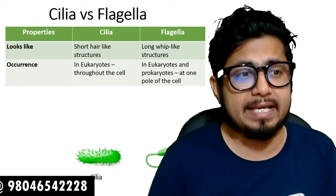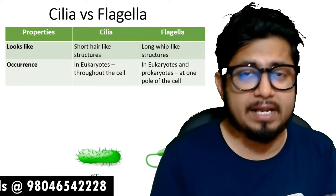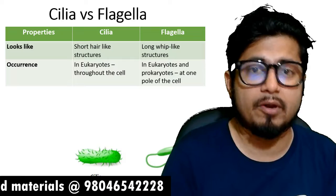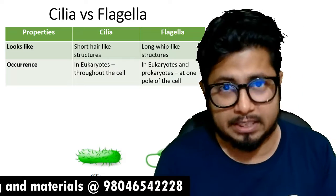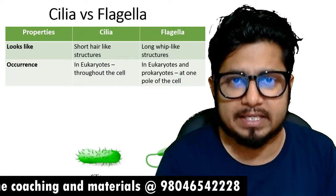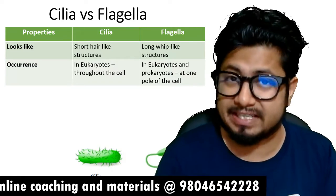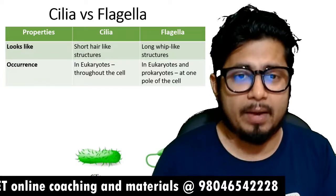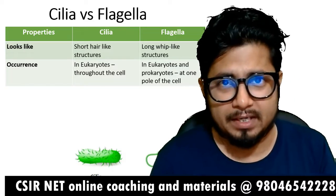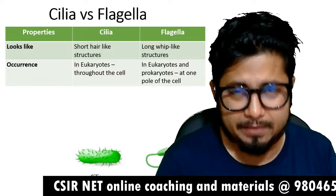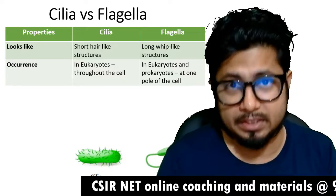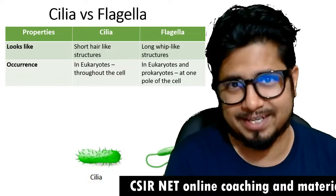Cilia are more found in eukaryotes, while flagella are found in eukaryotes as well as prokaryotes. Eukaryotic and prokaryotic flagella differ in structure: prokaryotic flagella are made up of the tube-like protein flagellin, while eukaryotic flagella are made up of tubulin.